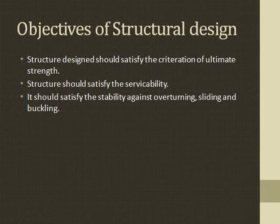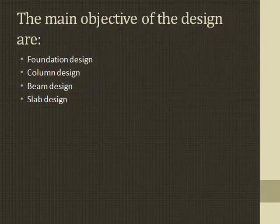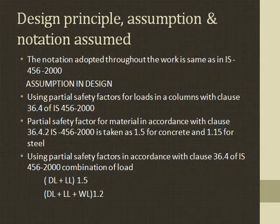Objectives of structural design: the structure must satisfy ultimate strength, serviceability, and stability against overturning, sliding, and buckling forces. The main design objectives are foundation design, column design, beam design, and slab design. The notation assumption throughout the work follows IS 456-2000. Partial safety factors for load use clause 36.4, and for material use clause 36.4.2 of IS 456-2000 — taken as 1.5 for concrete and 1.15 for steel. Load combinations used are dead load plus live load × 1.5, and dead load plus live load plus wind load × 1.2.